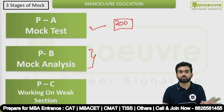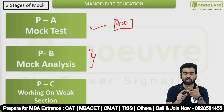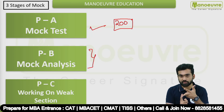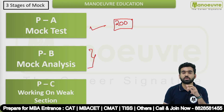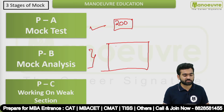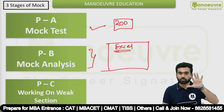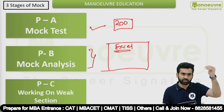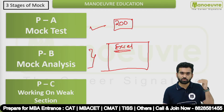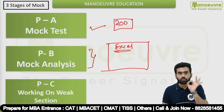Rather than giving 5 mocks, give fewer but do proper analysis. Analysis mein sabse kya karna hai - aapko find out karna hai: what is my strength, what is my weakness, and where am I doing maximum mistakes, silly mistakes kahan pe ho rahi hain. For this, mein aapko Excel sheet maintain karne ki recommend karta hoon. Excel sheet mein sab data daalo - konse topic mein problems create ho rahe hain. Quant ka syllabus likho, reasoning ka syllabus likho, verbal ka syllabus likho, GK ka syllabus likho.